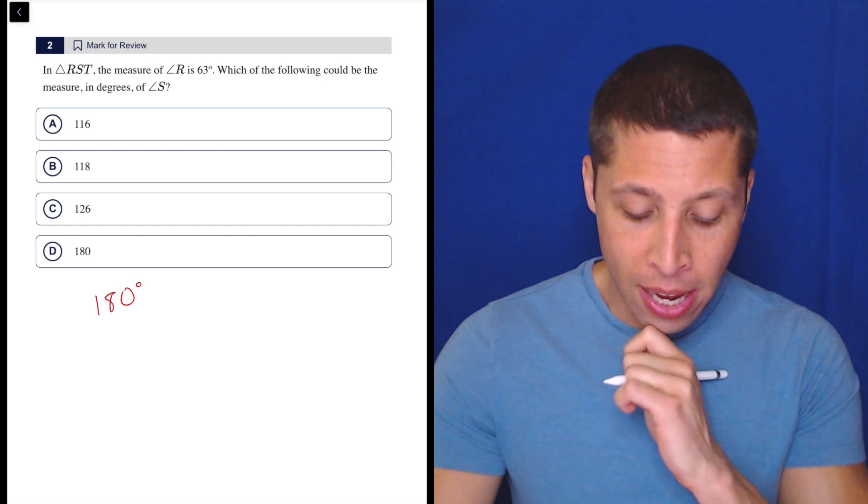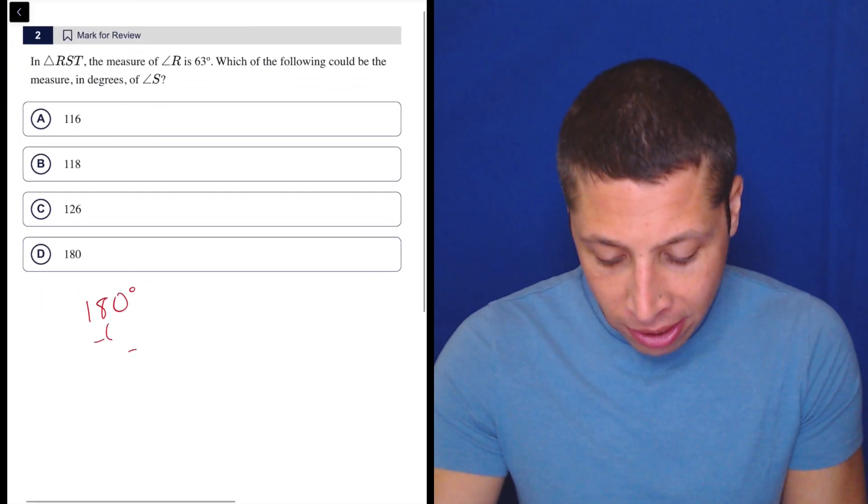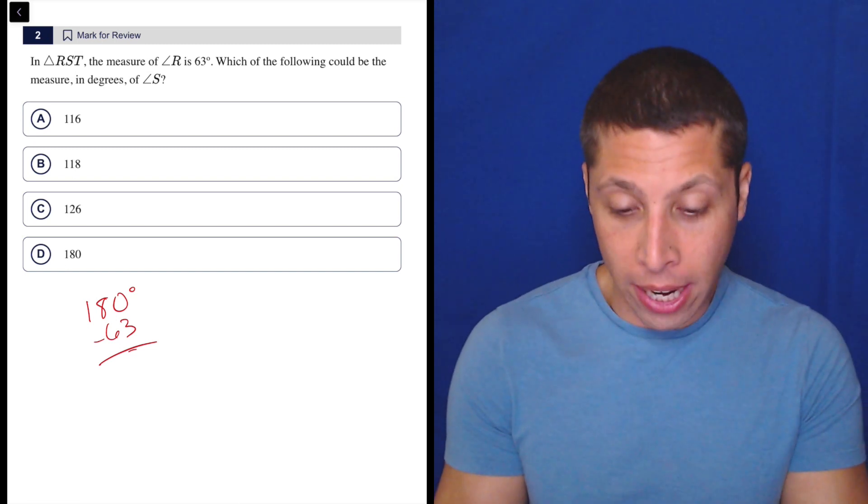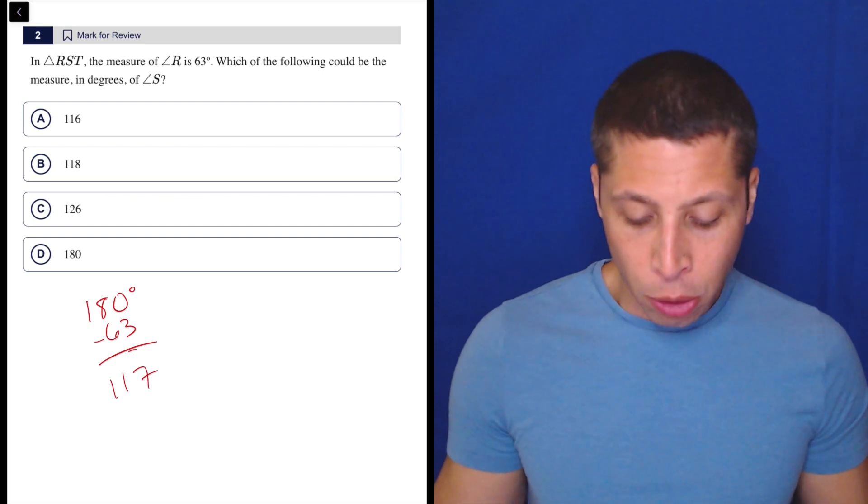So from there, just subtract out the 63. Let's subtract that out: 63. And here I just use my regular calculator, so we have 180 minus 63 and we get 117.